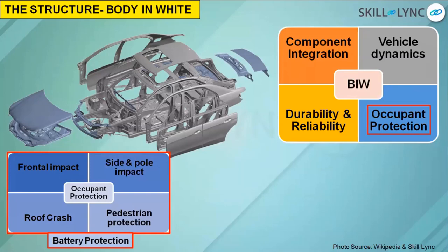There is also a factor for roof crash. When a vehicle takes a roll and becomes unstable — a somersault — if the vehicle rolls over the road, the roof should not crash. If the roof crashes, it will directly hit the head of the occupant, which becomes very fatal.